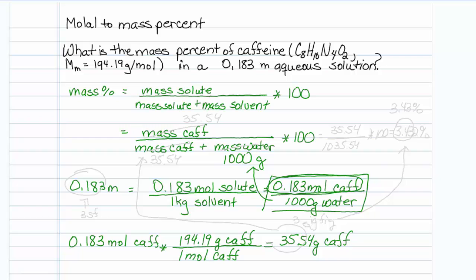This number then is going to go over here, 35.54 and 35.54. I just need to take 35.54 and divide it by 1,035.54 and multiply it by 100. When I punch that into my calculator, it is equal to 3.432 percent.